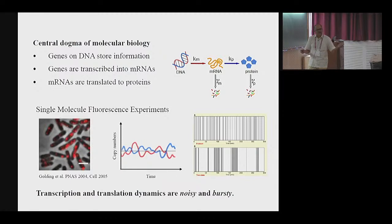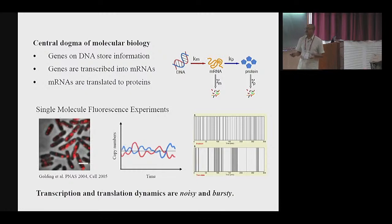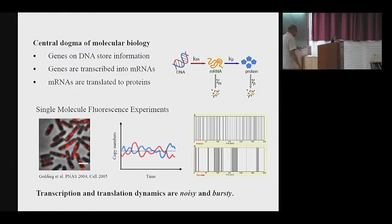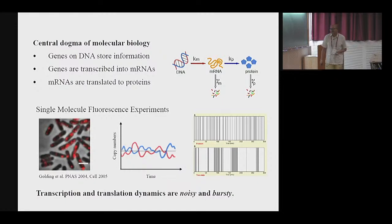There can be external noise due to the environment, which all cells experience. But there is also intrinsic noise due to random binding and unbinding. On top of that, there is another phenomenon experimentalists observed — that these processes are bursty. The question we are more interested in is: what is the first passage time characteristic of such a problem, and does burstiness have any role to play?